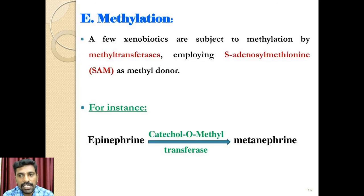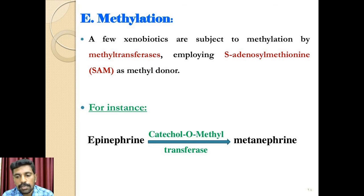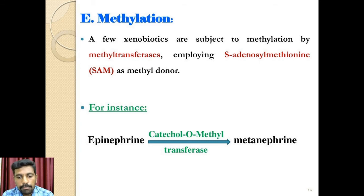The 5th reaction is methylation. Methylation is a relatively minor conjugation pathway in xenobiotic metabolism, but it is very important in the biosynthesis of endogenous compounds such as epinephrine and melatonin. In the catabolism of biogenic amines such as norepinephrine, dopamine, serotonin, and histamine, methylation plays a role. For example, epinephrine is transformed to metanephrine by the enzyme catechol-O-methyltransferase.